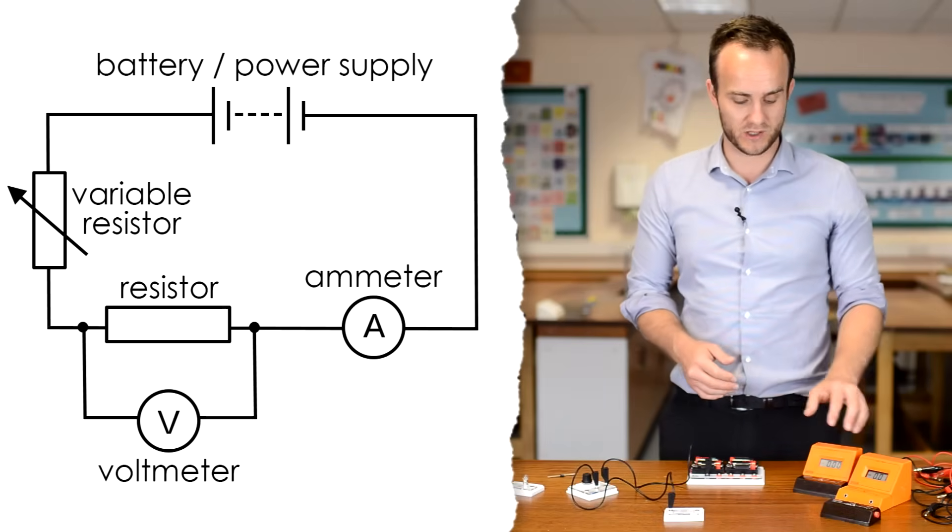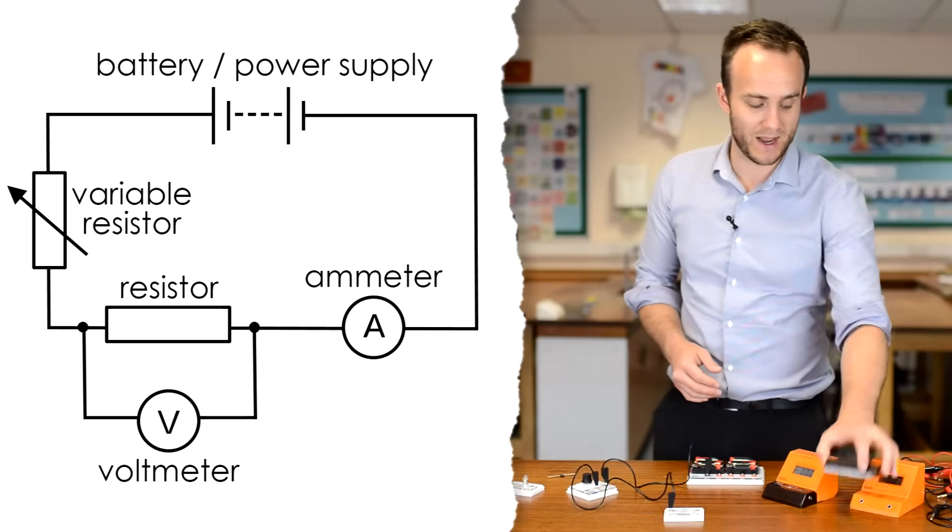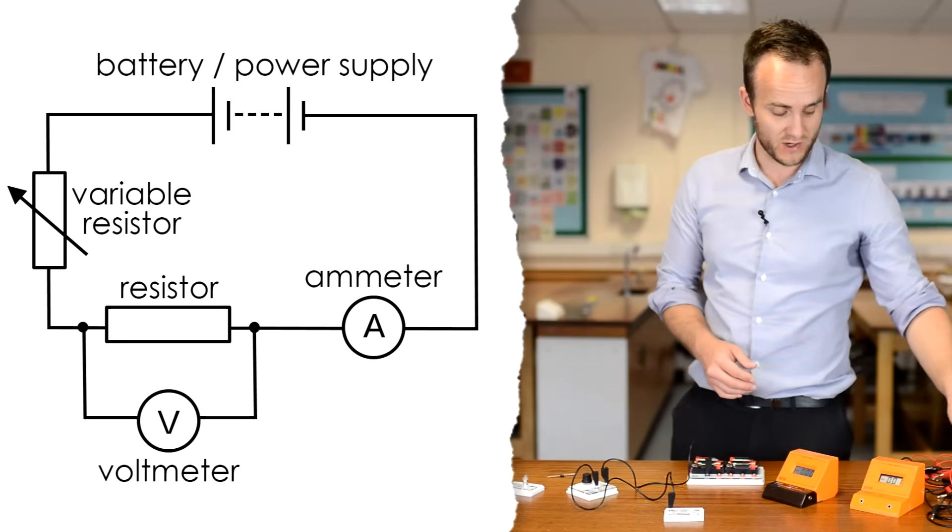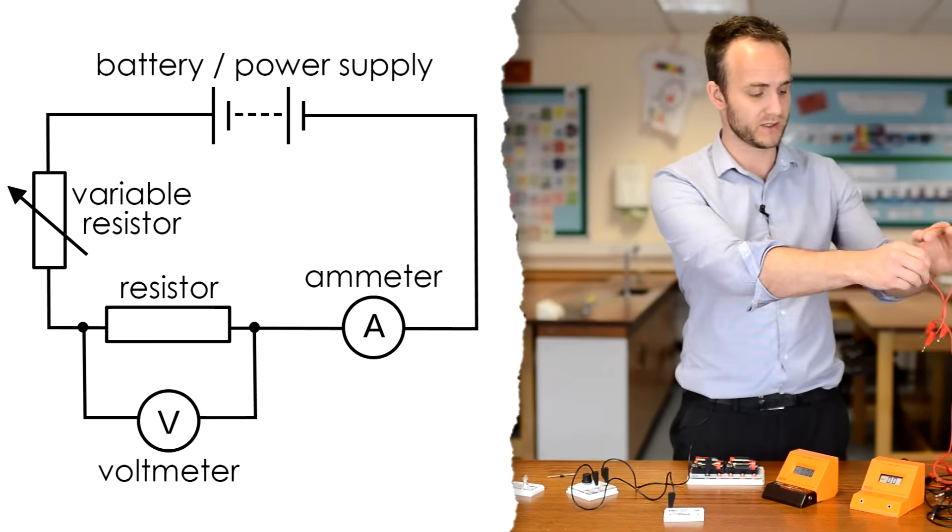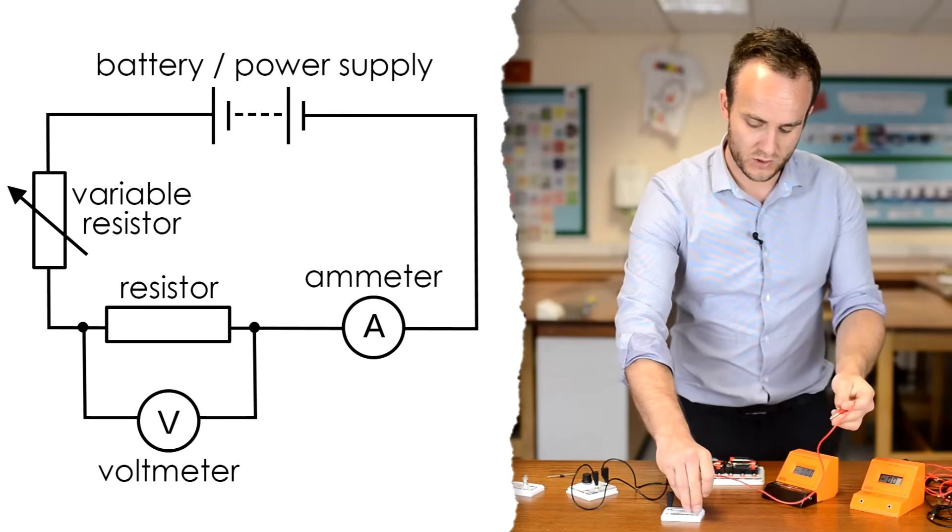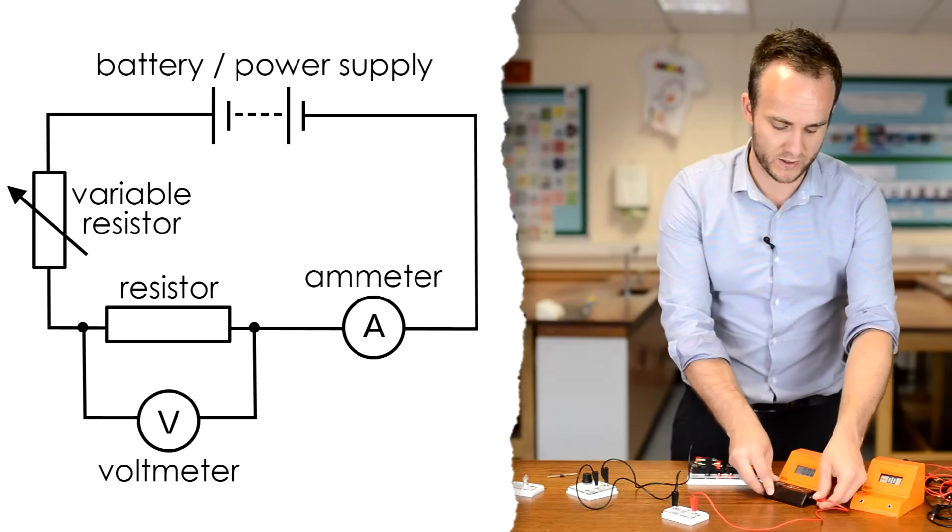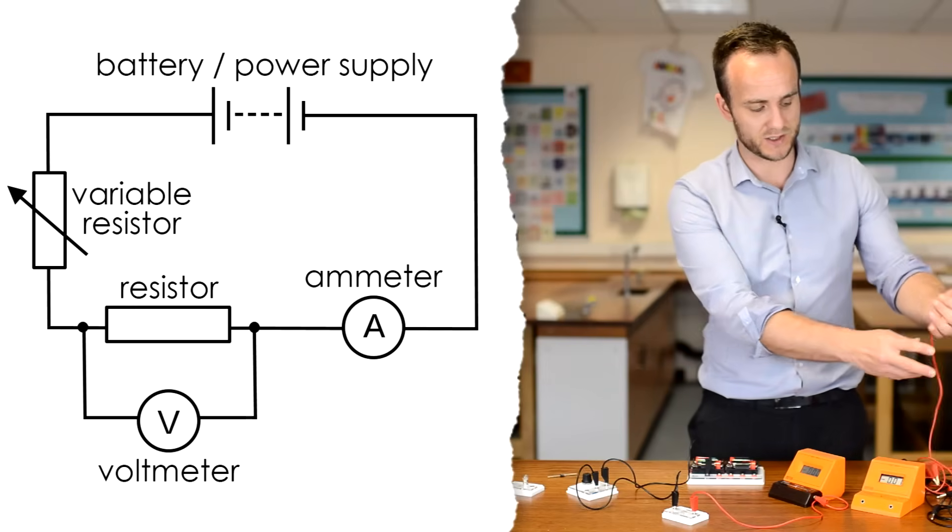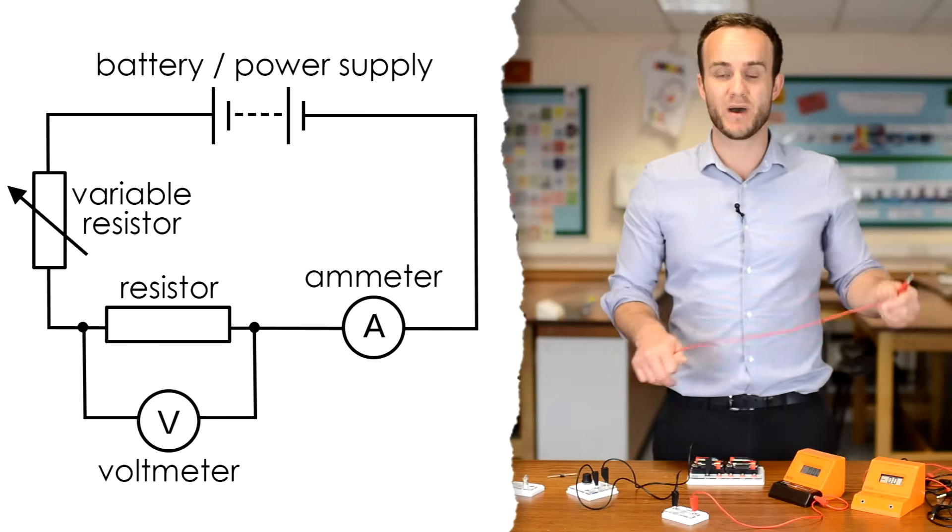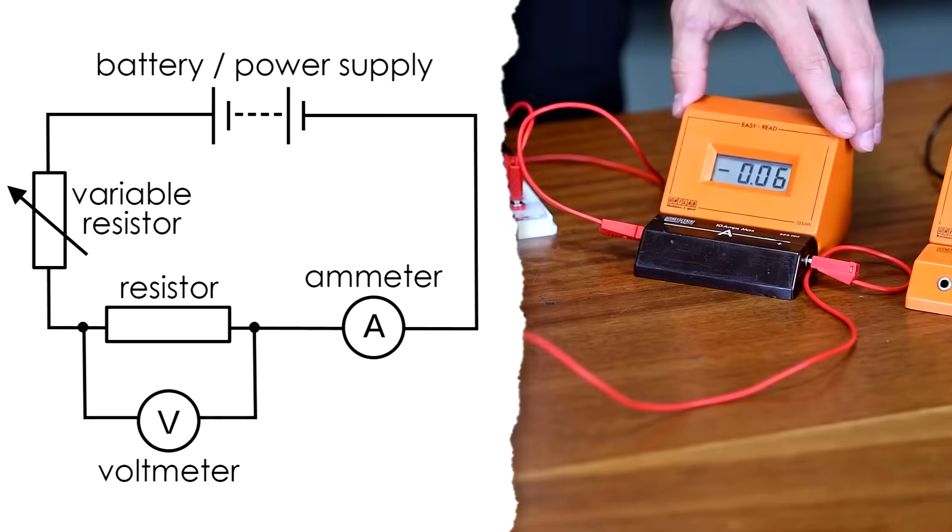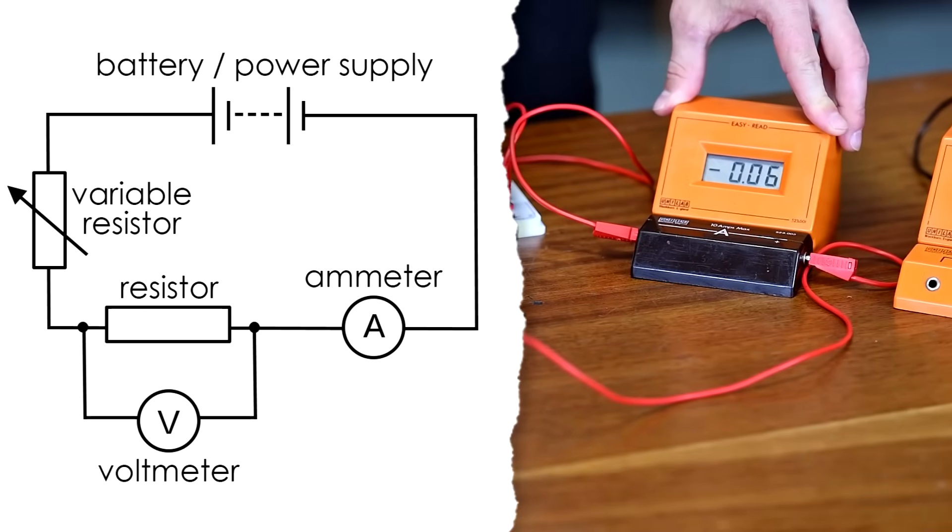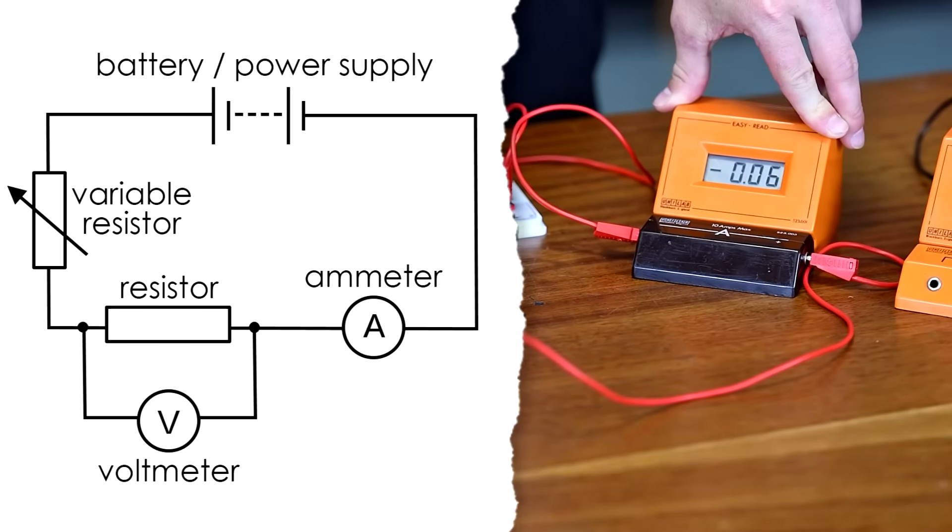And then we need to hook up our ammeter. Now, ammeters always go in series with the component that we're looking at. So we're just going to take two leads, one from the resistor, and then finally back to the battery.